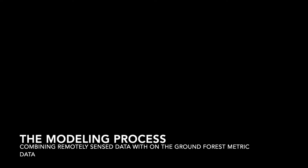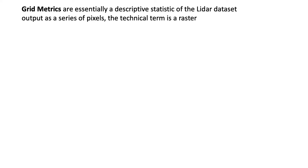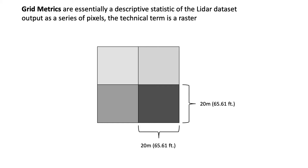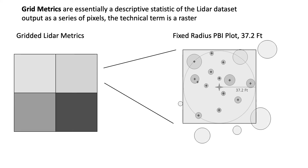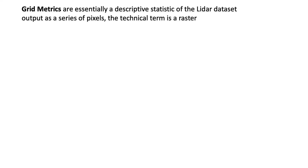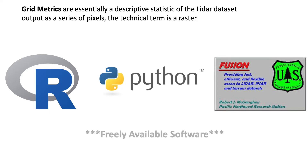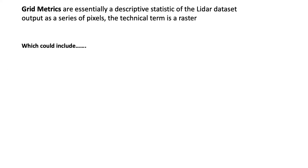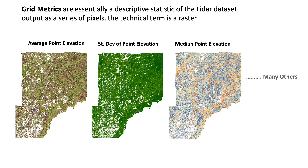In the forest modeling process, we are taking data from which we have gathered a sample — the forest structural and condition metrics on the ground — and relating them to remotely sensed data we have everywhere. First, however, we need to develop metrics from the remote sensing data, also referred to as point cloud-derived products. Grid metrics are one example of point cloud-derived products and are a descriptive statistic of the LiDAR dataset, which resource assessment produces as a series of pixels called a raster. To produce grid metrics, there are open-source software options including R, Python, and Fusion, which was developed by the US Forest Service. There are hundreds of potential descriptive statistic rasters we could derive, including average point elevation, standard deviation of point elevation, and median point elevation.